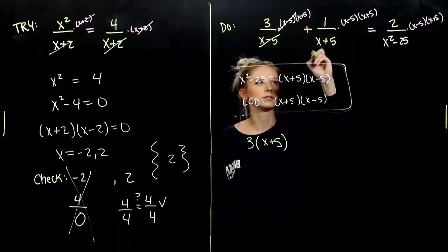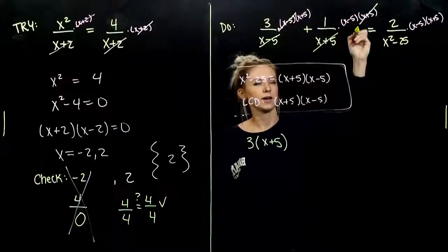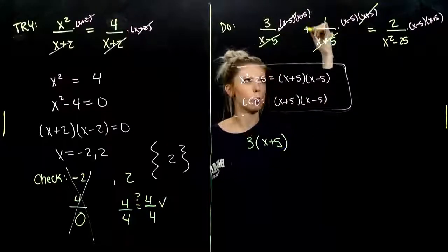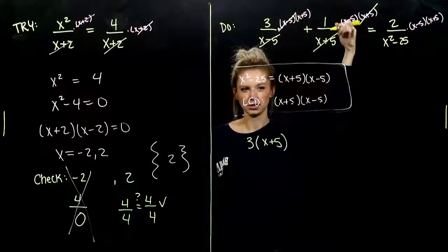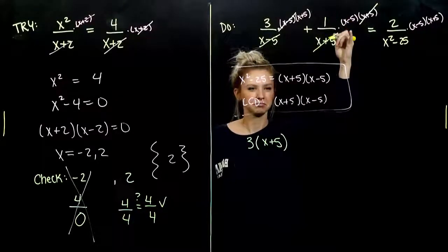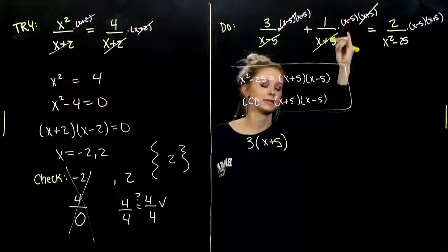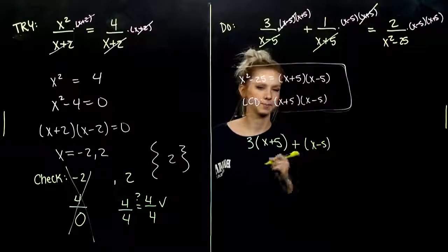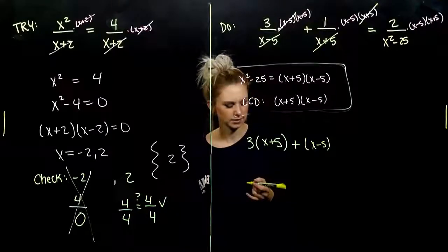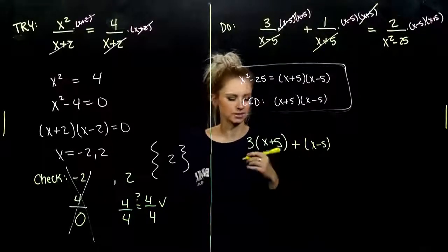Next, what's going to cancel? X plus 5, X plus 5, and I've got 1 times X minus 5. So, do I really need to write the 1? 1 times anything is itself. So, I've got X minus 5. We don't need the parentheses in this case, but it's a good habit to get into.